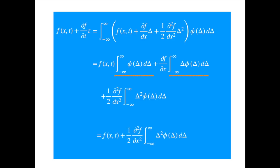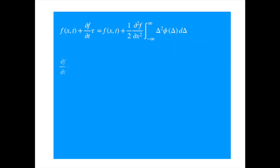Now we can cancel the f on both sides, and then shift tau to the right hand side, and if we represent the integral by D, we get the diffusion equation.